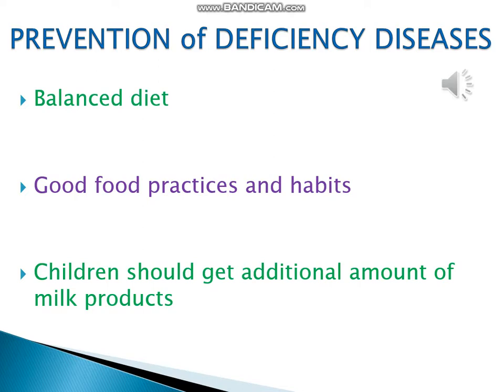Malnutrition is a term used for a condition caused by improper or inadequate nutrition, and often results in one or more deficiency diseases. In 1910, an American scientist found that the outer layer of a rice kernel contains a substance called thiamine, which is needed by the body to prevent beriberi. This substance, also called vitamin B, was the first vitamin to be discovered.